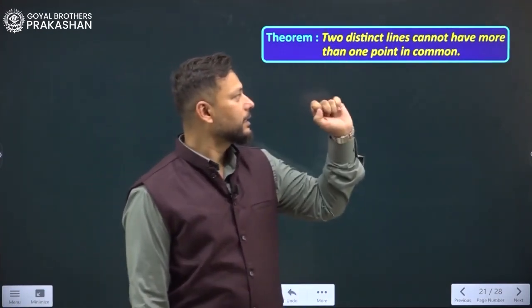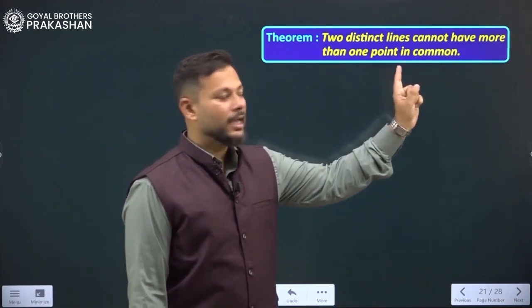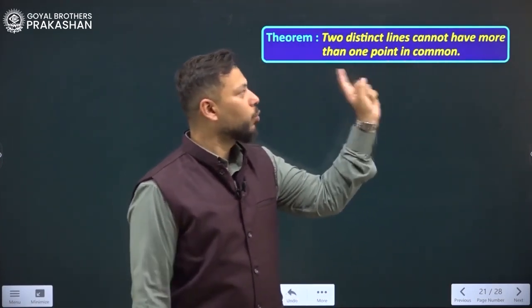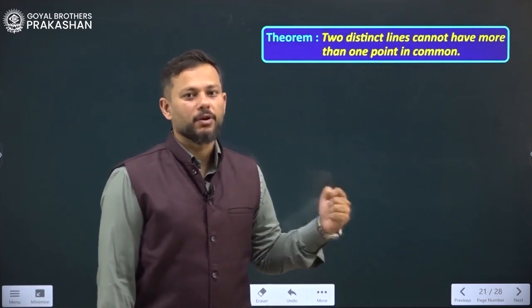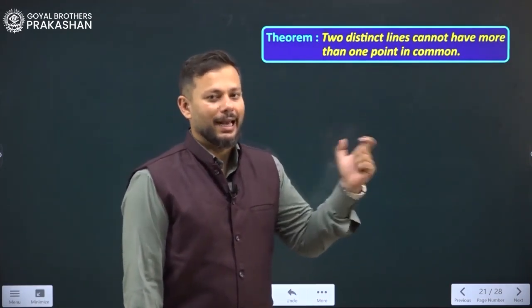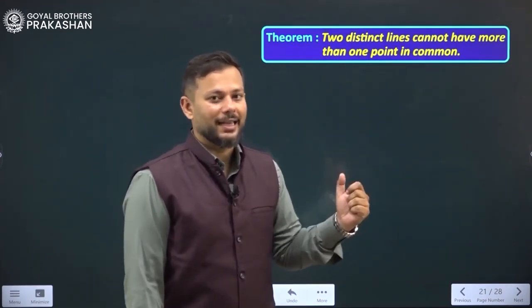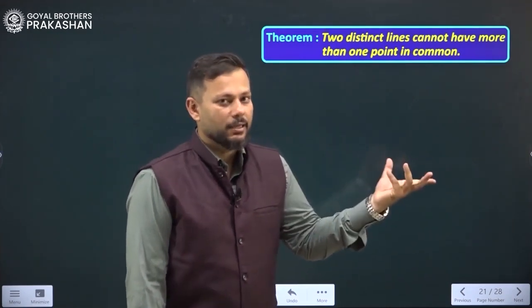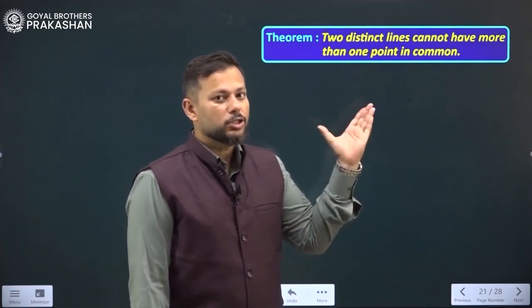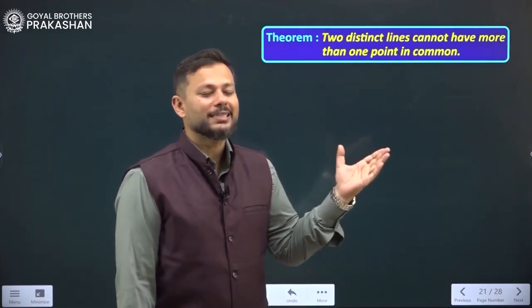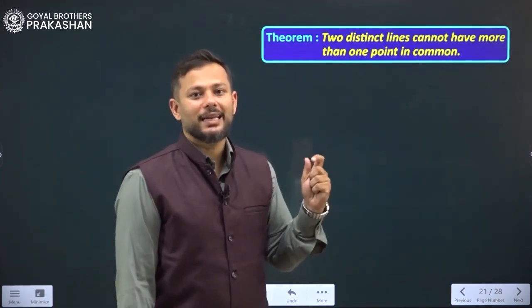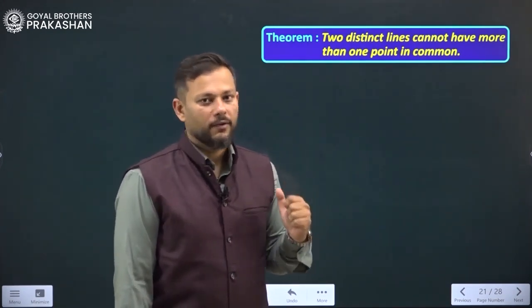The theorem here states two distinct lines cannot have more than one point in common. Let me repeat the statement for you. Two distinct lines, that means two different lines, they can intersect. So this theorem says that they cannot intersect at two points or they cannot intersect at more than one point.